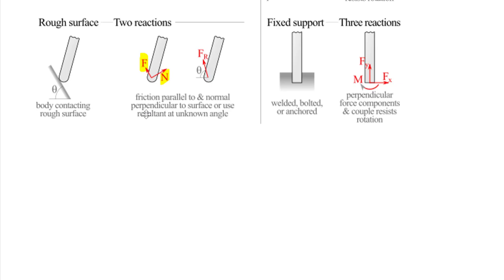The last one is the granddaddy of them all — it has three different reactions. Keep in mind that a two-dimensional problem can only have three unknowns. This is called a fixed support: anything welded, bolted, anchored, or sunk into the ground gives a fixed support. It resists forces in two orthogonal directions plus a resistant couple moment. We solve algebraically and get a positive or negative value for the couple M; if positive, we assumed correctly; if negative, we assumed incorrectly and the moment goes in the positive right-hand-rule direction.